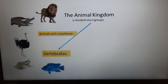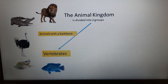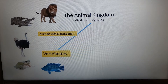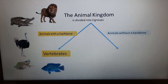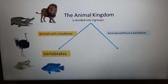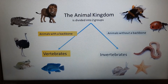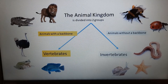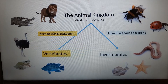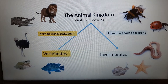Hopefully you've managed to find that. All the animals shown here are examples of animals which have a backbone. The other group is animals with no backbone. Examples include snails, worms, bees, and ladybirds. Animals without a backbone are called invertebrates, while animals with a backbone are called vertebrates.